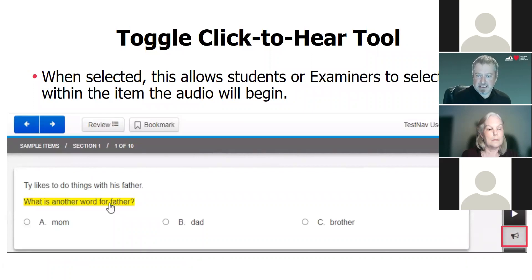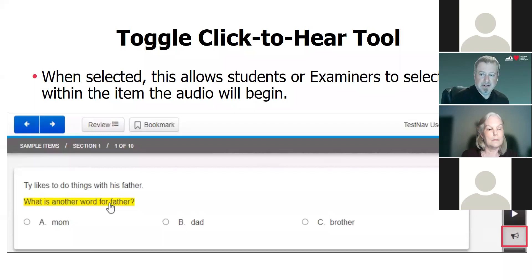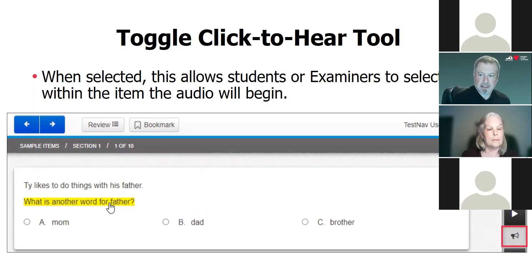The click-to-hear tool — that little megaphone on the right — allows the student or examiner to select just a portion of the item. They can select the second sentence, and when you click, it would start reading from that point. You could also select just an answer choice: if you wanted to hear just option B read again, you could select that and it would read just that portion.